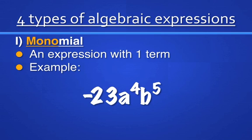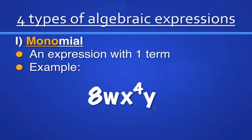Another example: negative 23a to the fourth, b to the fifth. It looks like a lot because you have negative 23, one variable here, and another variable here, but it's still not separated by addition or subtraction. Therefore, there's still only one term. Same thing with 8wx to the fourth times y — there's nothing separated by addition or subtraction, so no matter how long it is, it's still only one term.